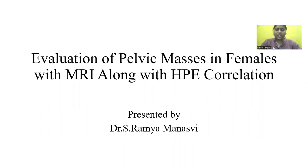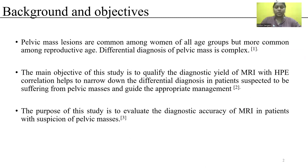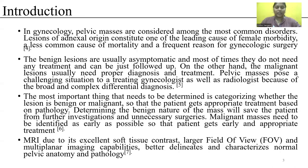Evaluation of Pelvic Masses in Females with MRA along with HPE Correlation: Background and objectives of the study. Pelvic mass lesions are most common among women of all age groups but more common among the reproductive age. The differential diagnosis of pelvic mass is complex. The main objective of this study is to qualify the diagnostic yield of MRA with HPE correlation to narrow down the differential diagnosis in patients suspected of pelvic masses and guide appropriate management. The purpose is to evaluate the diagnostic accuracy of MRA in patients with suspicion of pelvic masses.